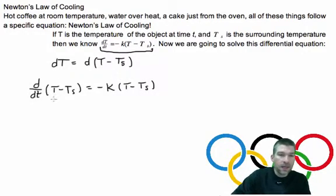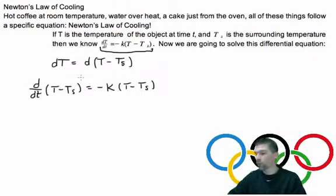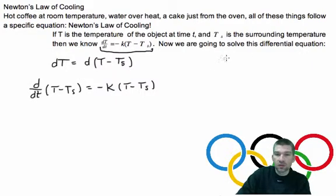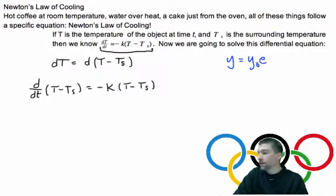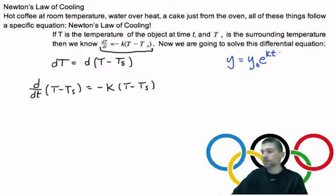And so, we can go one step further with this and separate our variables and do all our integrating. But we're basically using our law of exponential change. So, let's just rewind real quick. Law of exponential change has this shape: Y equals the initial amount E to the KT power.